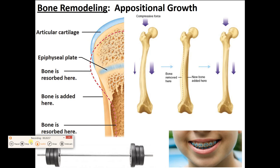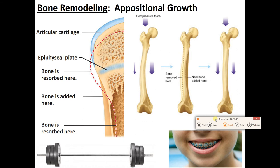There's another kind of growth called appositional growth — where we remodel, grow in width, add to one part of the bone, or take away from another. This is due to bones dealing with stress. Osteocytes measure the stress and communicate with osteoblasts and osteoclasts, telling them to build new bone in certain places and remove bone in others. Examples include braces changing the structure of your jaw bones and lifting weights stressing your bones.